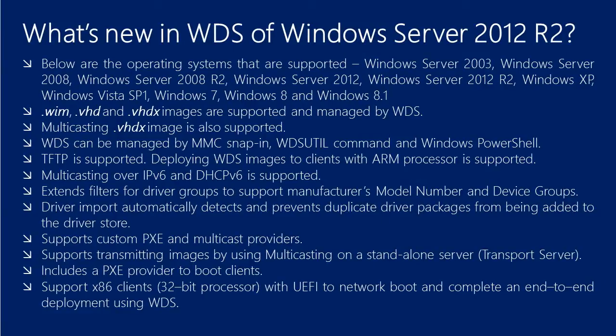These are the new features of WDS in Windows Server 2012 R2. It can now support more operating systems, starting from Windows XP and Windows Server 2003 up to Windows 8.1 and Windows Server 2012. Images such as .wim, .vhd, and .vhdx are supported and can be managed by WDS. You can multicast .vhdx images in WDS, and WDS can be managed by MMC snap-in, WDSutil command, and Windows PowerShell. TFTP is supported with some new features. Deploying Windows images to ARM processor clients is now supported in WDS.